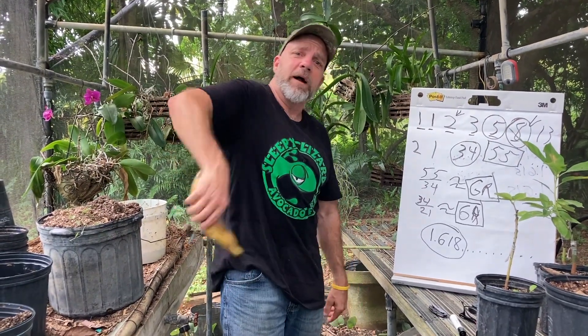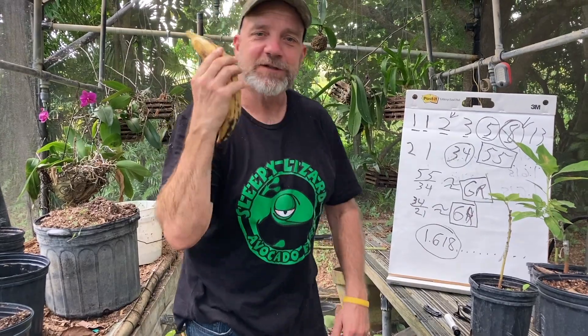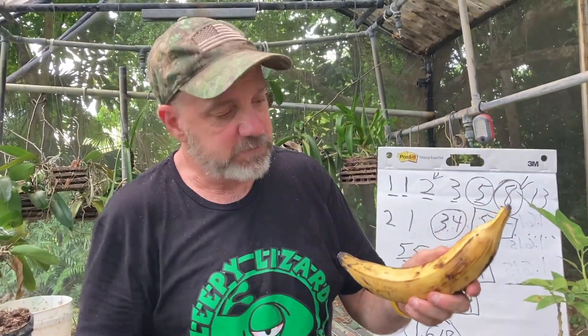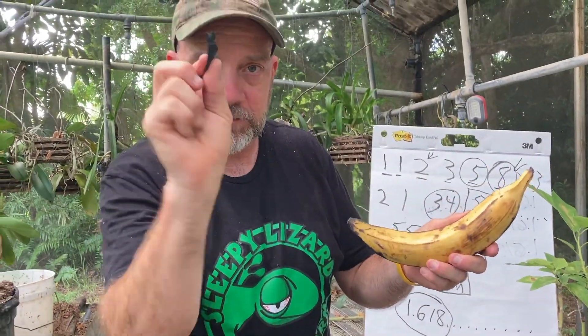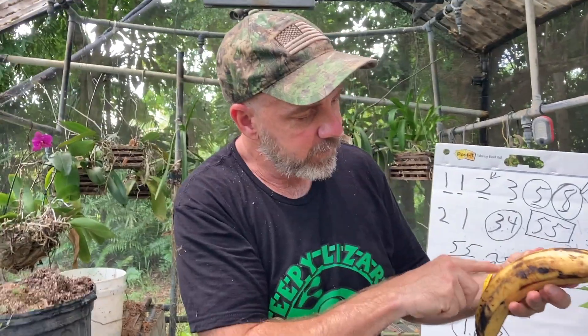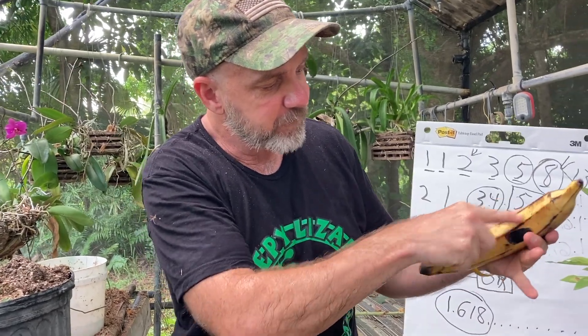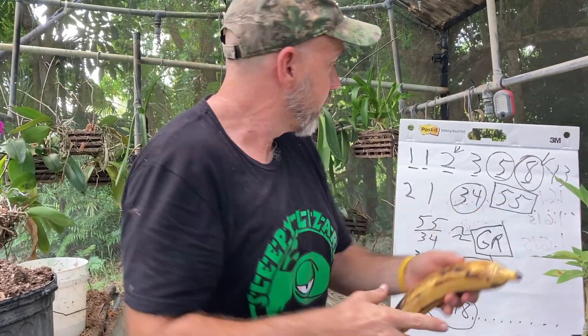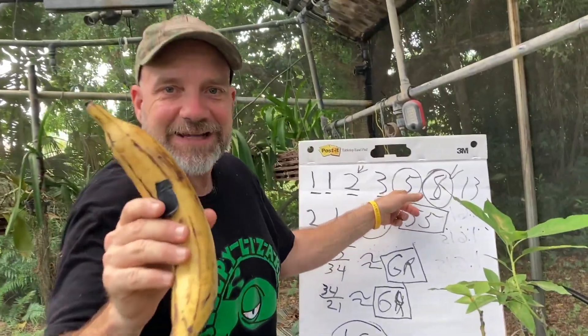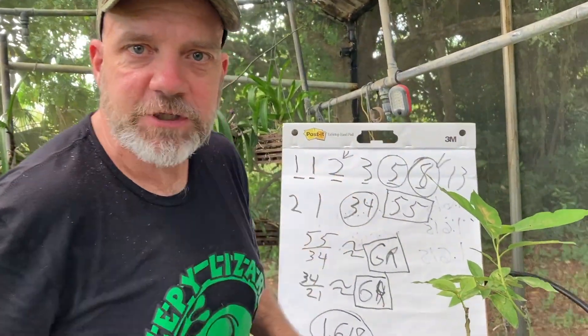Yes, this is a banana in my pocket — let's check it out and see if we can find a Fibonacci number. Let's count the sides. I'll mark the first side with this piece of electrical tape. One, two, three, four, five. The number of sides on a banana will always be a Fibonacci number.